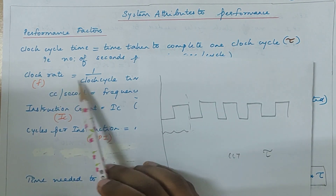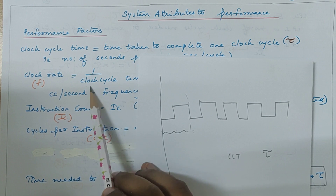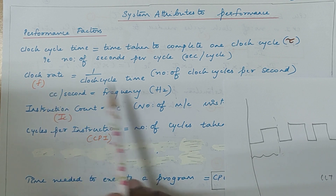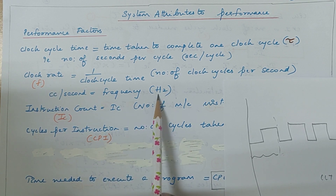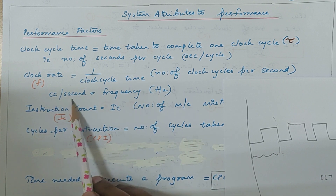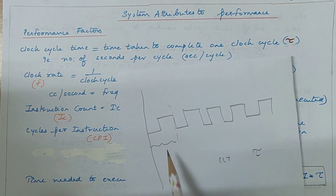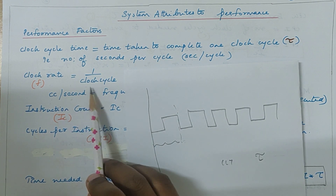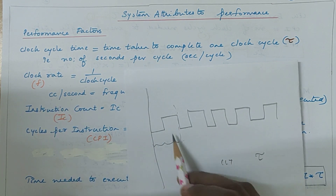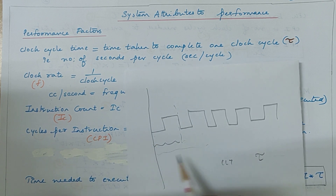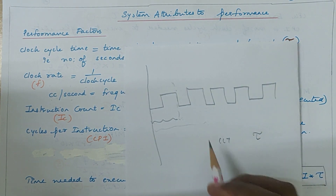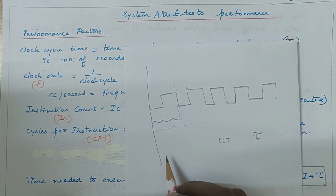If you take the inverse of the clock cycle time, you get the clock rate. Clock rate is nothing but 1 divided by clock cycle time, which is measured in frequency — that is, hertz. The clock rate is the number of clock cycles per second.